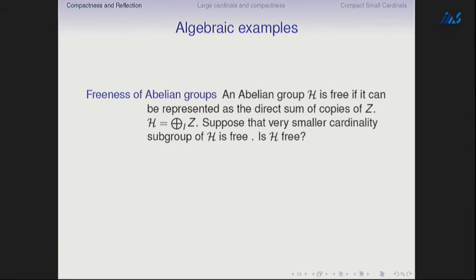Some algebraic examples — just a representative case of a long list. An abelian group is free if it can be represented as a direct sum of copies of the simplest infinite abelian group, which is ℤ, the integers. Think of it as vectors of integers where only finitely many coordinates are different from zero. Suppose that every smaller cardinality subgroup of H is free — does that mean that H itself is free?